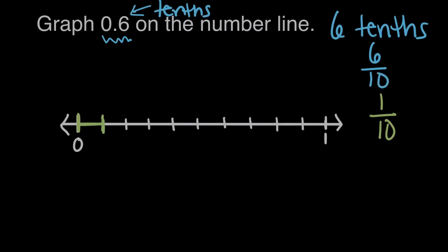So if one of these spaces represents one out of 10 equal spaces and we want six-tenths, then we need to travel six of the 10 equal spaces. Six-tenths of the way, six of the 10 spaces.